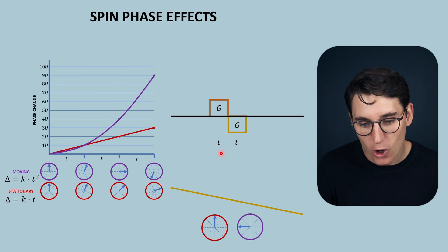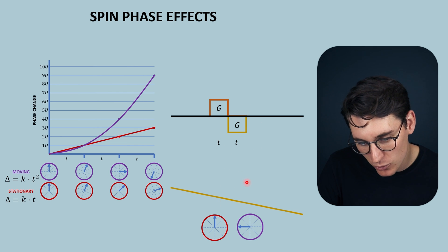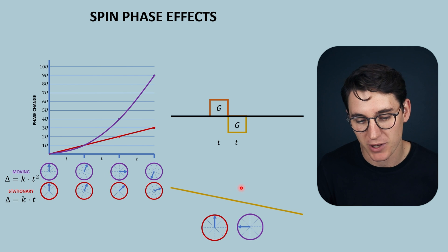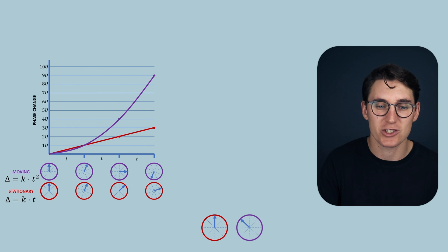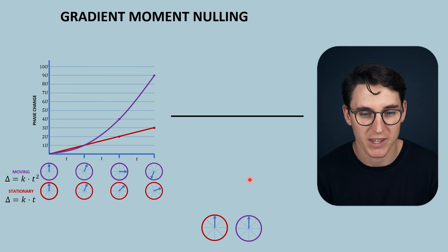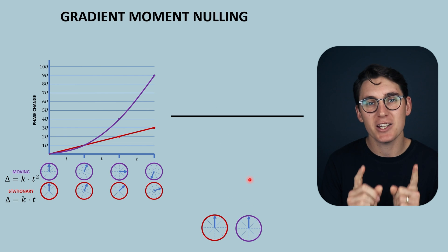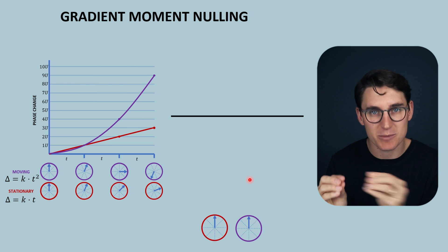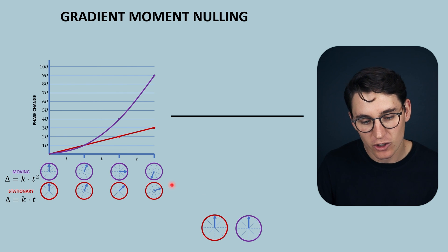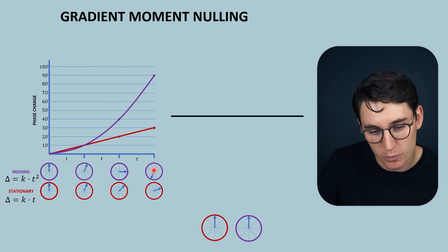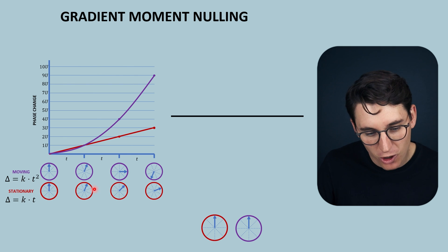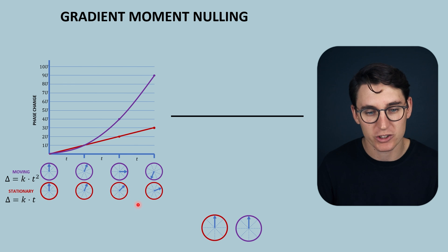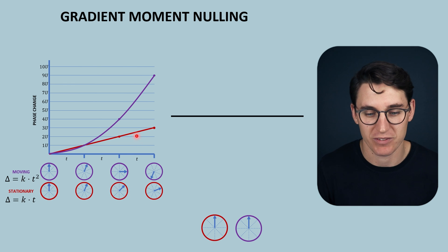It turns out we can compensate for the movement of moving spins through a slice whilst a gradient is being applied using something known as gradient moment nulling. Gradient moment nulling compensates for this phase loss as spins move through a slice, and it also still compensates for phase loss in stationary spins.